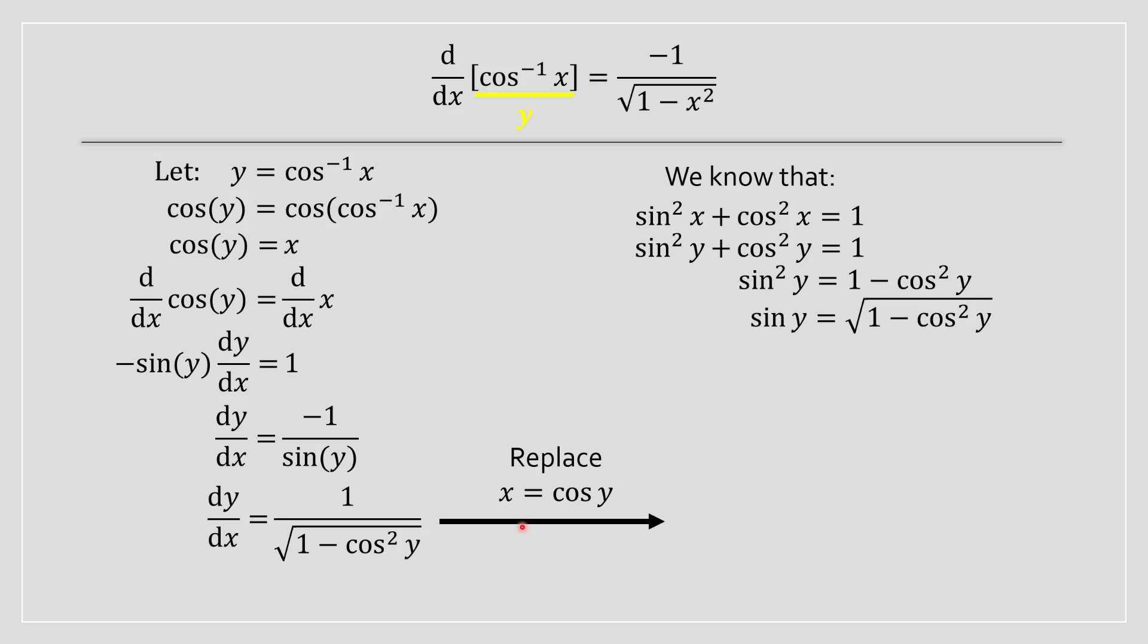And then the only last step that you have to do is basically replace x is equal to cos y into this equation. And this basically comes from here. So once you do that, what you're going to notice is that arc cos of x is basically equal to negative 1 divided by square root of 1 minus x squared.